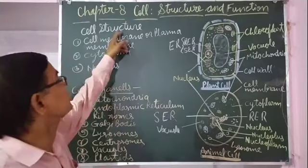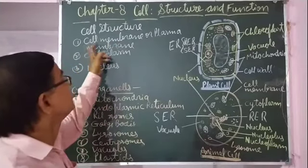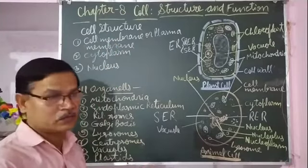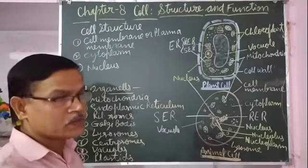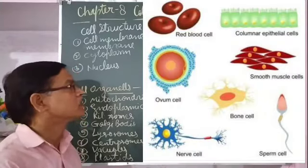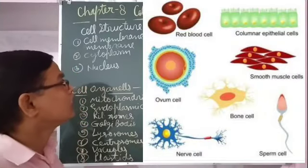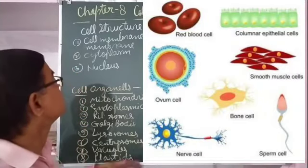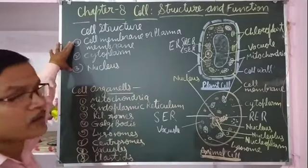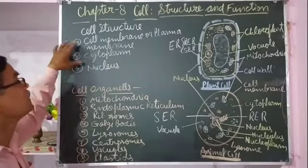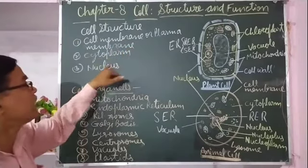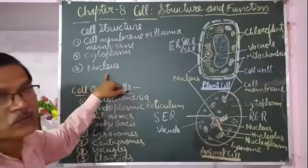Cell structure: although the cells are of various sizes and have various structures, all the cells have these three main parts — that is, cell membrane or plasma membrane, cytoplasm, and nucleus.